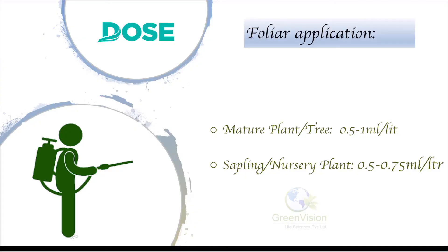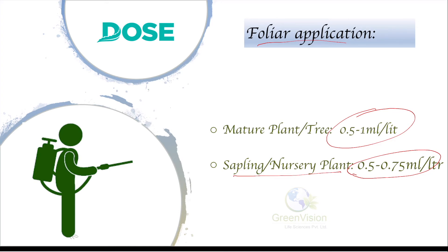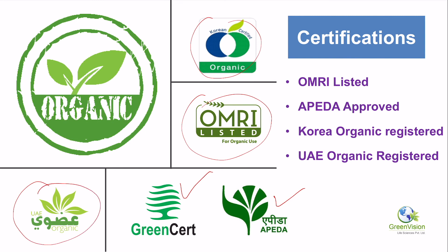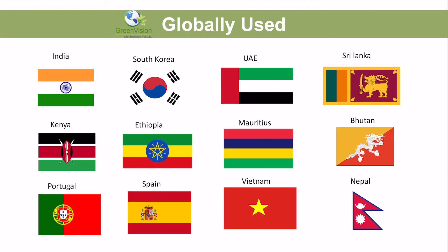For doses: MM-Pact is used for foliar application at very low doses. For mature plants, use only 0.5 to 1 ml per liter. For nursery or saplings and small plants, use only 0.5 to 0.75 ml per liter. This product is low-dose, concentrated, and fast in action. It is certified in South Korea, OMRI listed (American organic certification), APEDA certified, certified organic by Greensert, and UAE organic registered for use in organic agriculture. It is used globally — in India, South Korea, UAE, Sri Lanka, Kenya, and many other countries.